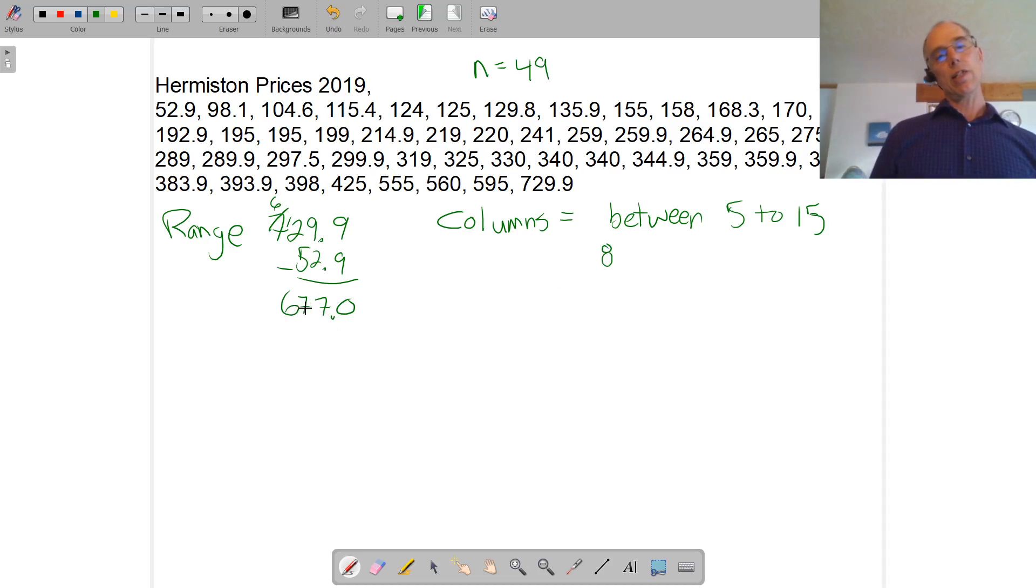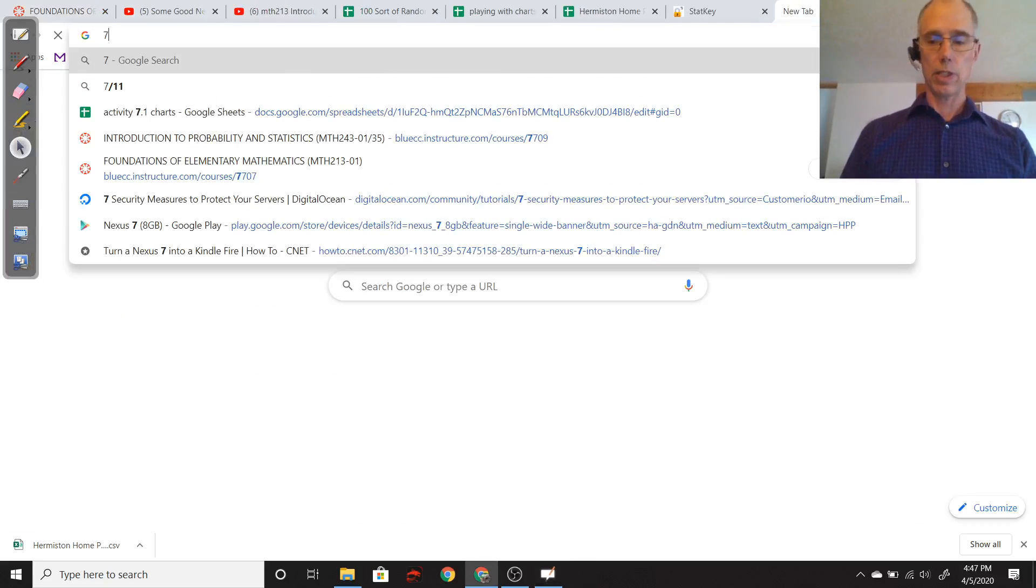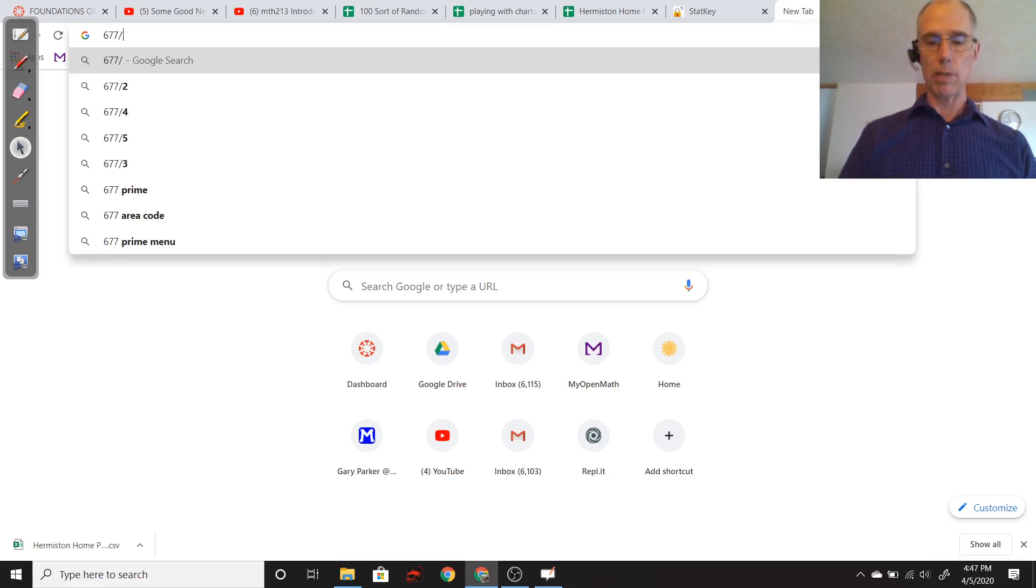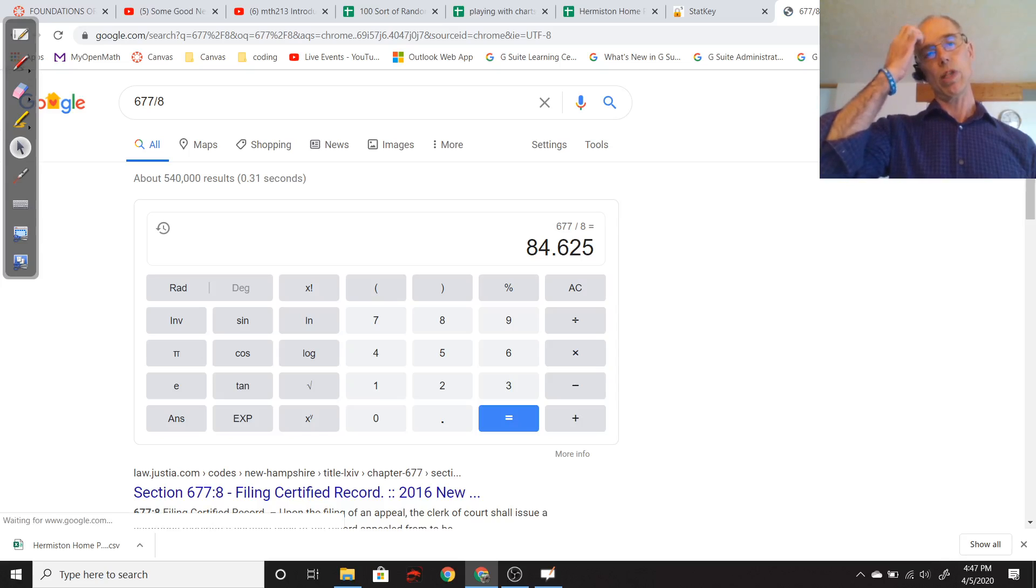So I want to take this distance, 677. That's from the min here to the max. And I want to break it up into eight groups. So I'm going to take that 677 and divide by 8. So calculator 677 divided by 8. And that gives me a width of about 84.